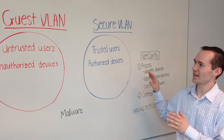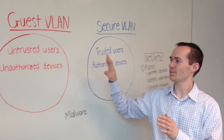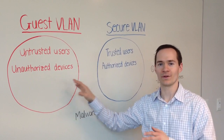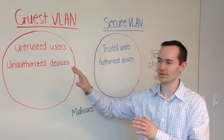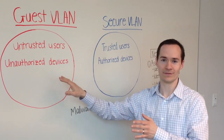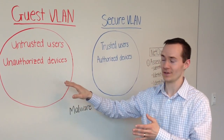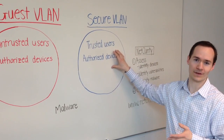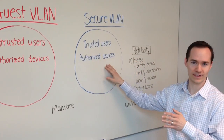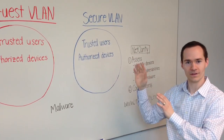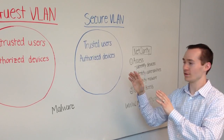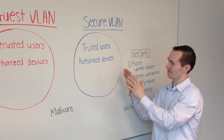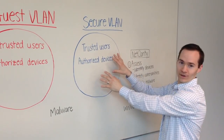In most cases, you'll have some type of a guest network where you're okay with untrusted users and unauthorized devices being over there. And then you'll have a secure network where you want just your authorized devices with all the antivirus and all that good stuff on there, and trusted users. This is what you want it to look like.